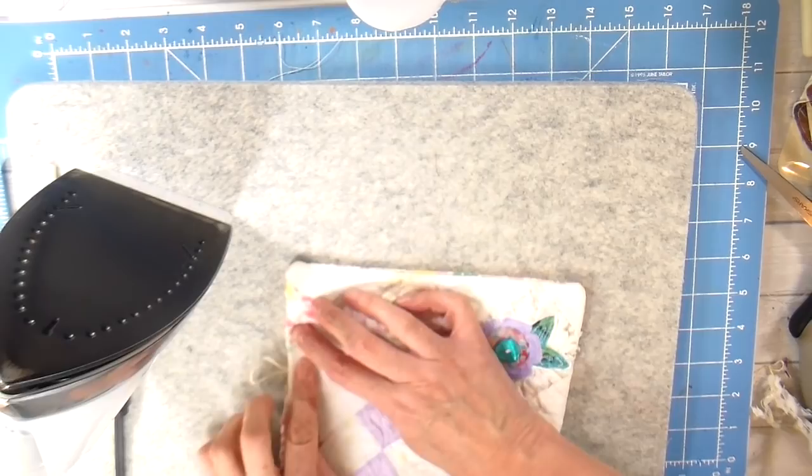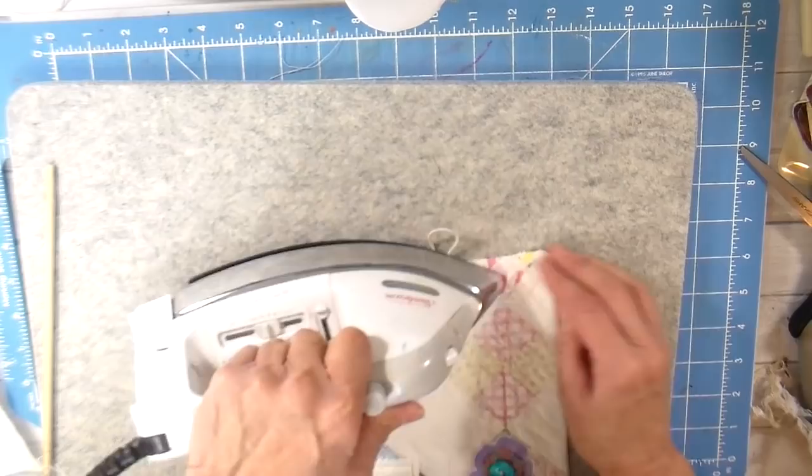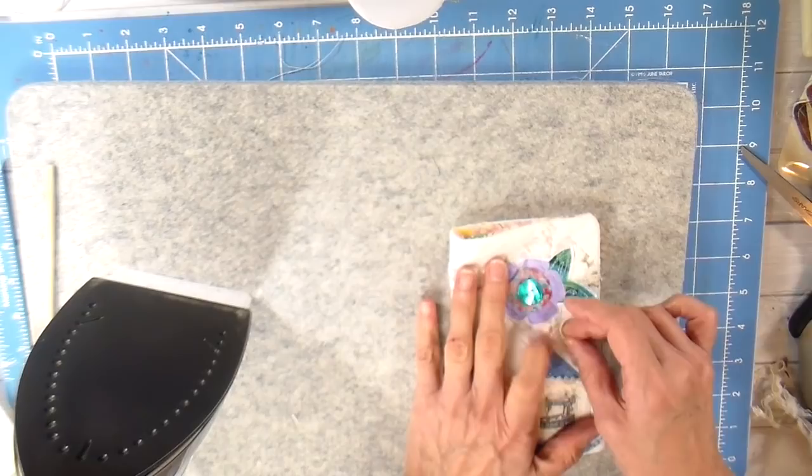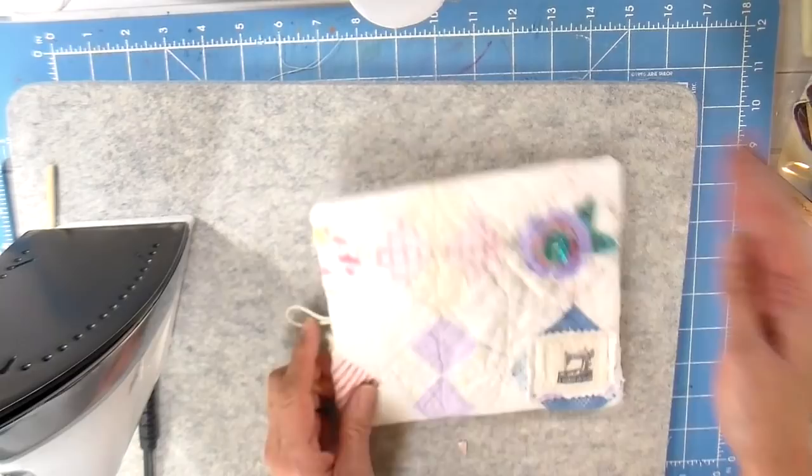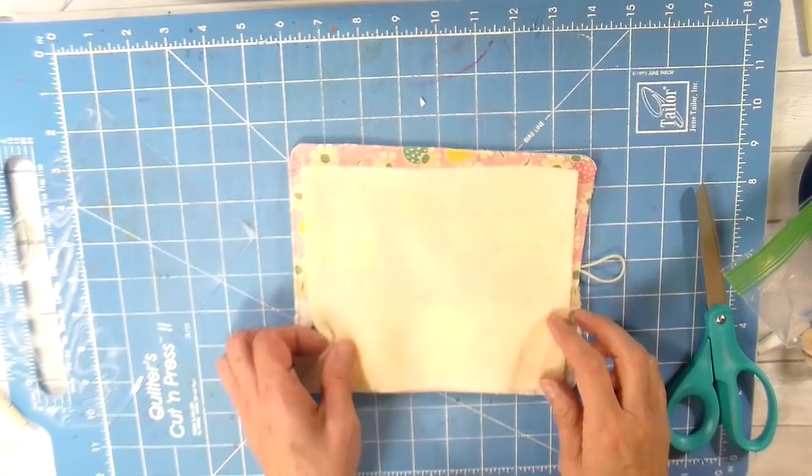Turning under right at that elastic, and I'm going to be topstitching this and going over that elastic a couple times as well just to make sure that's secured. Rolling out my seams and getting everything pressed down nice.